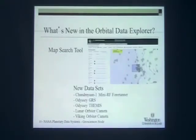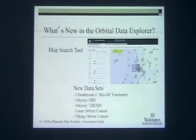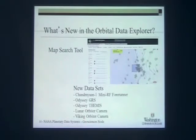So what's new? I don't know how many of you have used ODE over the last year, but we've done a number of upgrades. The primary one is this map search tool — if you haven't used the map search tool in ODE in the last year, you're remembering the old tool, which was not very good. This one is a complete search and retrieval capability in an online GIS. In addition, we've added a number of datasets. The big one we added just within the last week is Venus — this gives you a way to look for Venus data in conjunction with other data. We've also added some Chandrayaan data and some of these older datasets like the Lunar Orbiter Camera and the Viking Orbiter Camera.